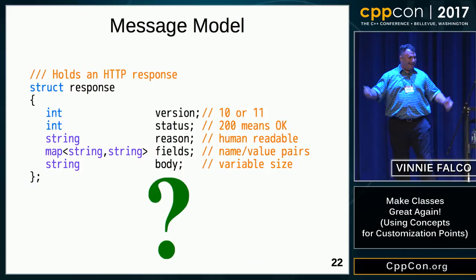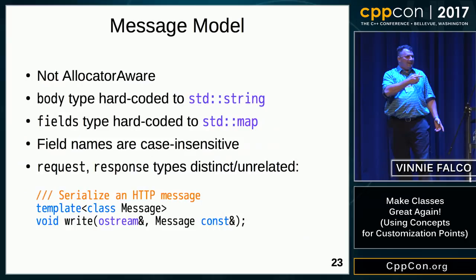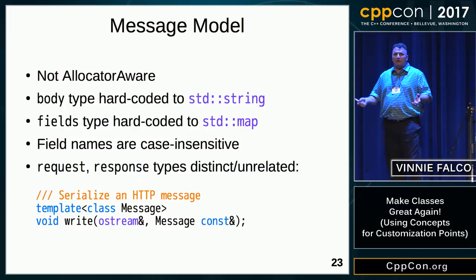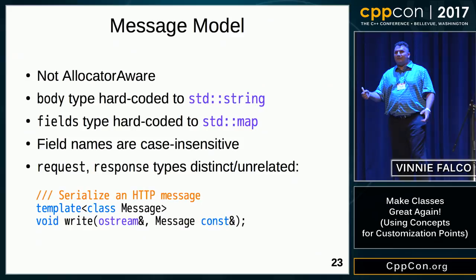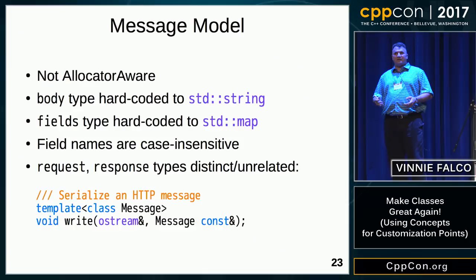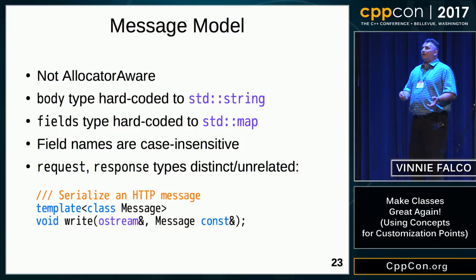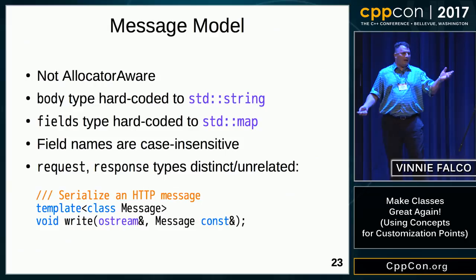So we've modeled HTTP messages — we're done. But what's the problem? These containers are not allocator-aware; they use the default allocator, which won't satisfy people doing low-latency programming in SG14. The body is stuck at string, but you might want a vector, or if you work at Facebook, your own optimized string. The choice of map is arbitrary — maybe you want an unordered map. The declarations don't account for case-insensitive field name comparisons. And request and response are distinct types with no relationship between them.